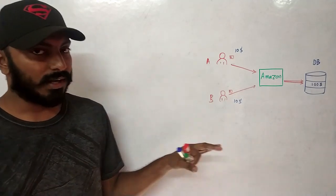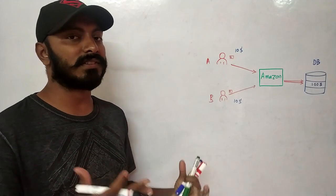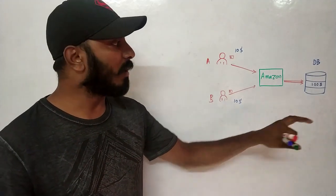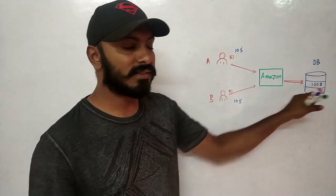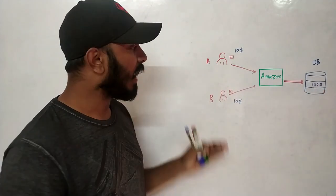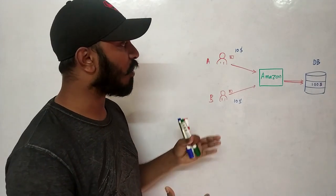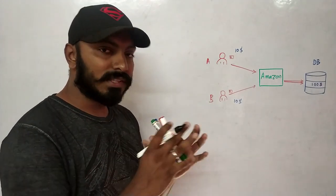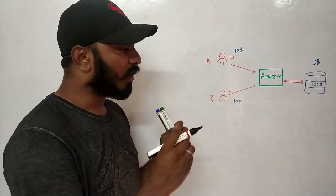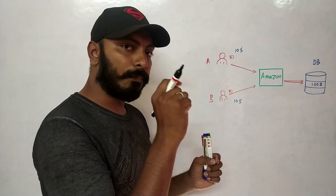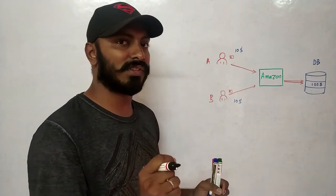Let's take an example where two friends are trying to purchase something on Amazon from the same wallet. The Amazon wallet has about $100, and both have the login information. Person A and Person B are both trying to purchase something worth $10. Now consider a hypothetical scenario in which both A and B are requesting or doing the payment at the same microsecond or nanosecond.